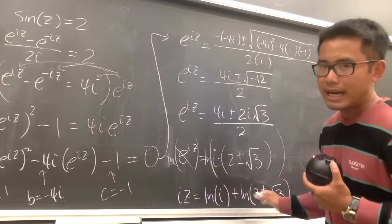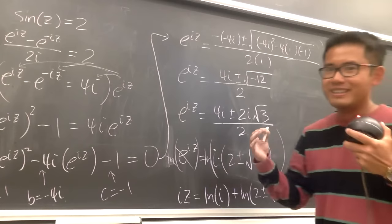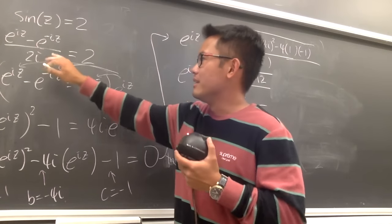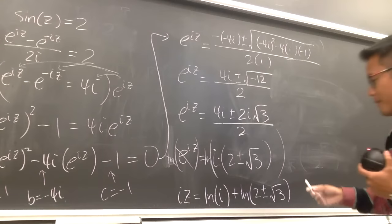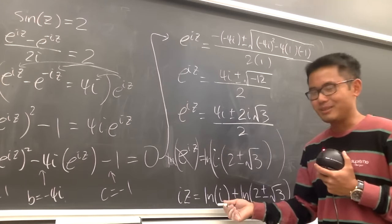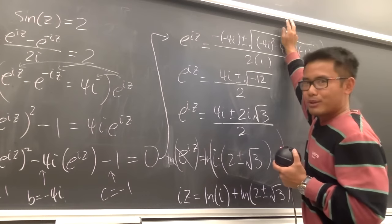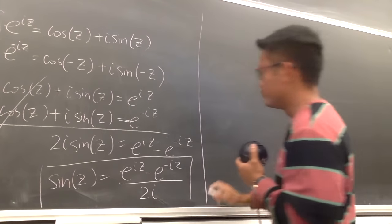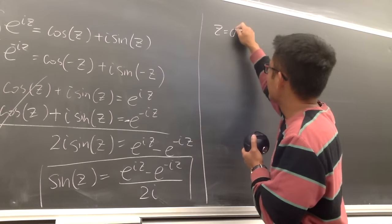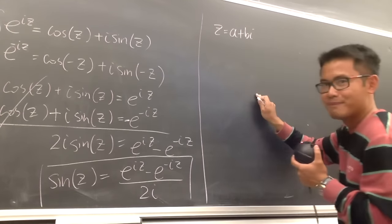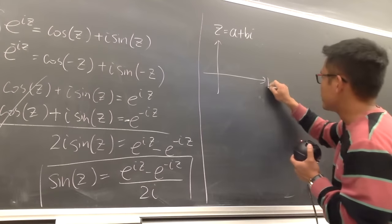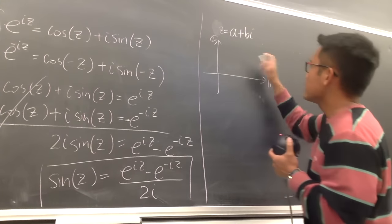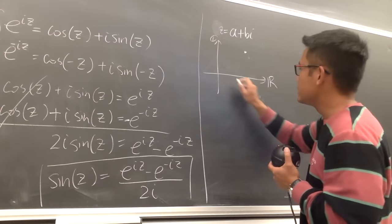Before finishing, we need to address what ln of i actually means. Just as we gave a new definition for sine in the complex world, we need to define how to take the natural log of a complex number. Let me go back to the first board and talk about the definition of the complex logarithm. Consider a complex number z equals a plus bi.